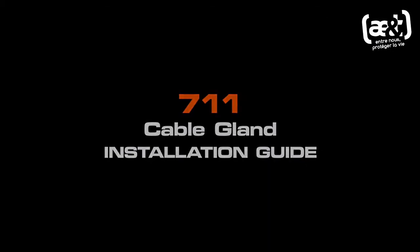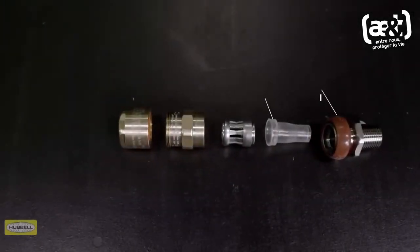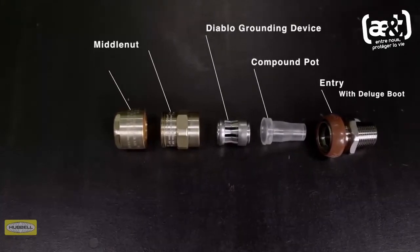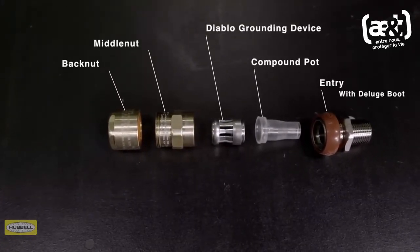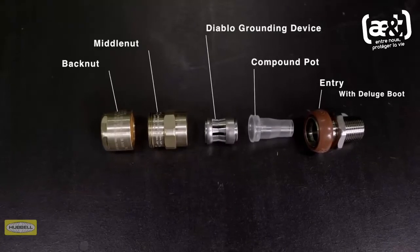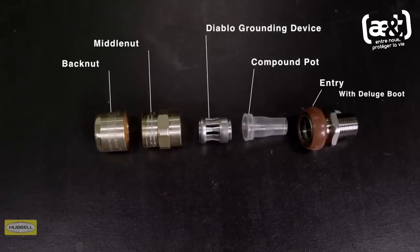The 7-Eleven cable gland consists of five key components: entry with deluge boot, compound pot, Diablo grounding device, middle nut with patented tightening guide, and back nut.